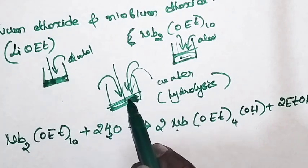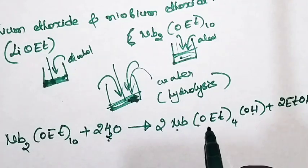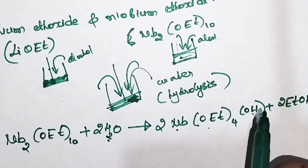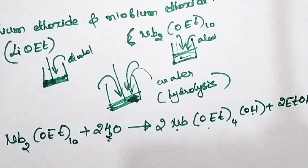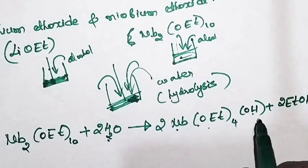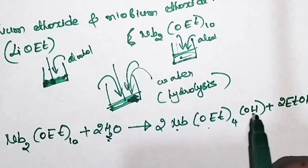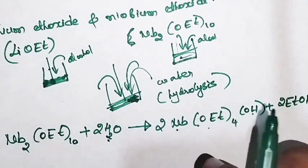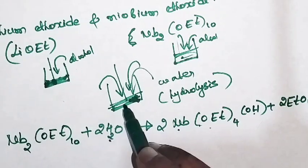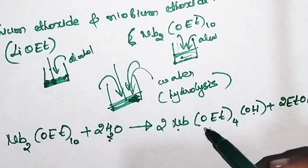The lithium ethoxide present in the beaker reacts with water to give hydroxy ethoxide of lithium. Similarly, niobium ethoxide reacts with water to give hydroxy ethoxide of niobium. So when you add water, both lithium ethoxide and niobium ethoxide react with the water to give their respective hydroxy ethoxides — hydroxy ethoxide of lithium and hydroxy ethoxide of niobium. Both will be present in the beaker. This mixture is our sol.